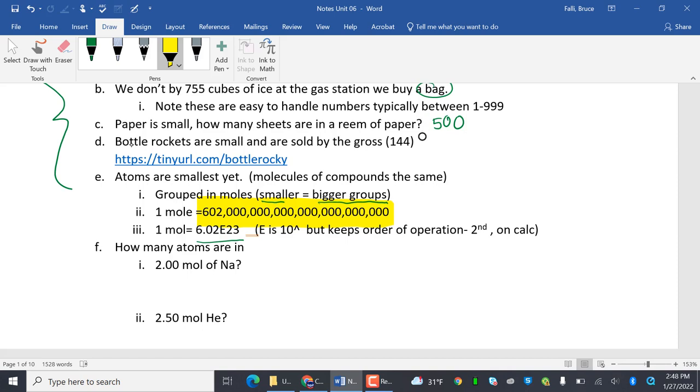E is 10 to the carat, but keeps the order of operation. And to get it on your calculator, you hit second and comma. That's what this means.